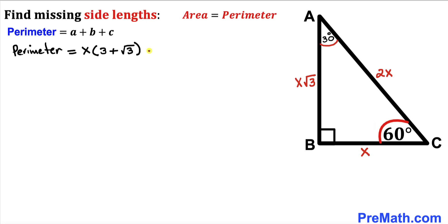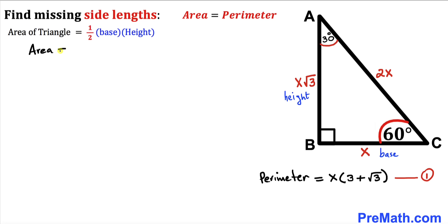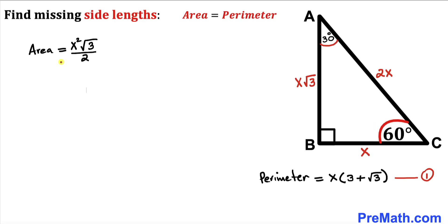Now let's recall the area of a triangle formula: area equals one-half times base times height. Here our base is x and the height is x times square root of 3. So the area of triangle ABC equals one-half times x times x times square root of 3, which gives us x squared times square root of 3 divided by 2. This is equation number 2.